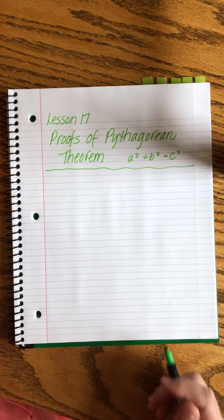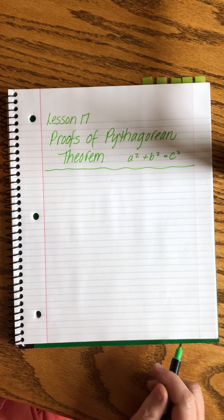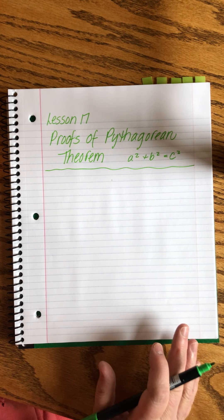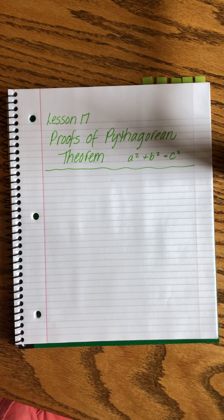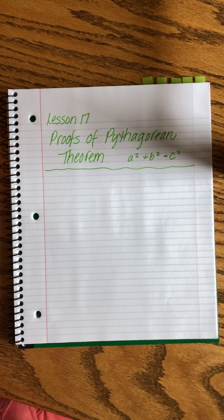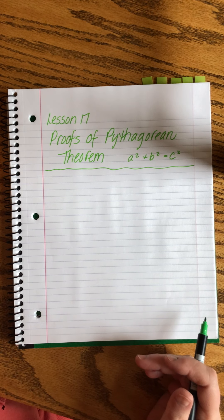So what I'm gonna do today is I'm going to prove it to you in two different ways and I want you to know that there are many different ways to prove the Pythagorean Theorem. These are two and that throughout the history of mathematics people have thought it great fun to try to find new ways to prove different things including the Pythagorean Theorem.